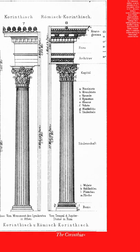Corinthian is the most complex order, which is tall and thin and features a decorative foot, volutes and acanthus leaves on the capital.